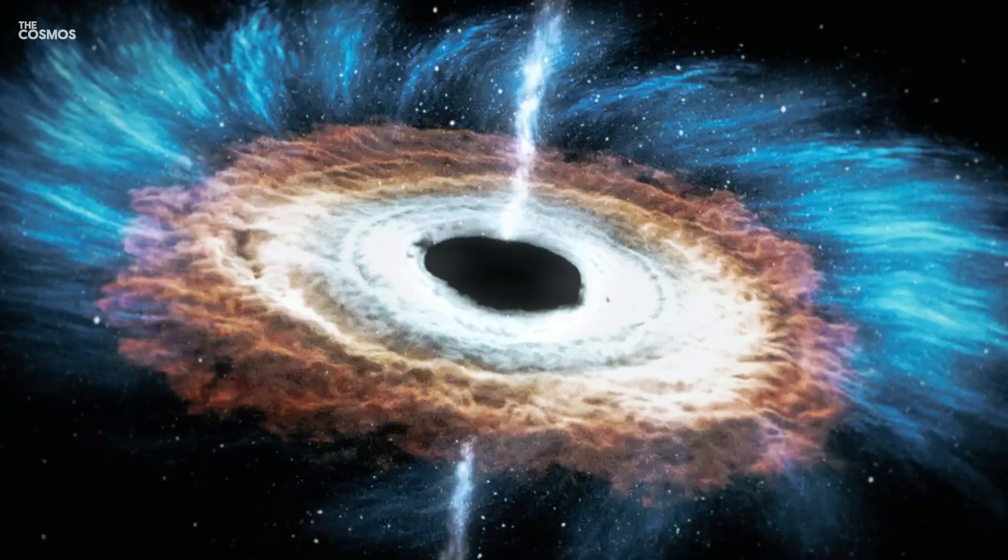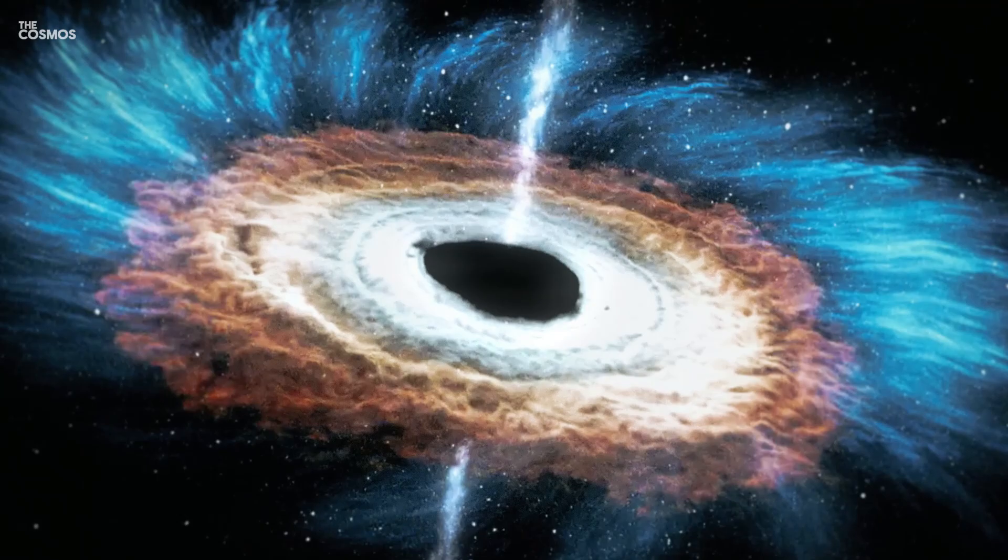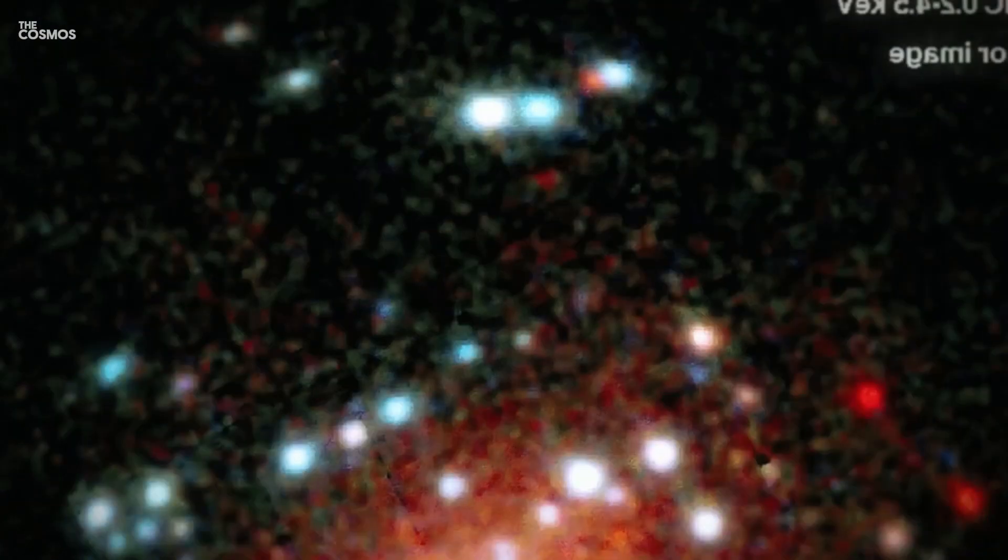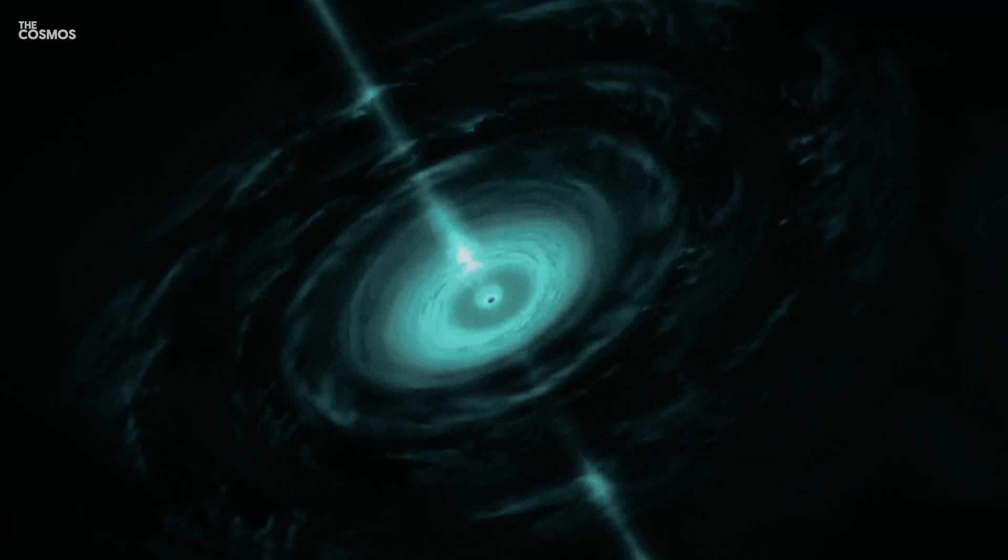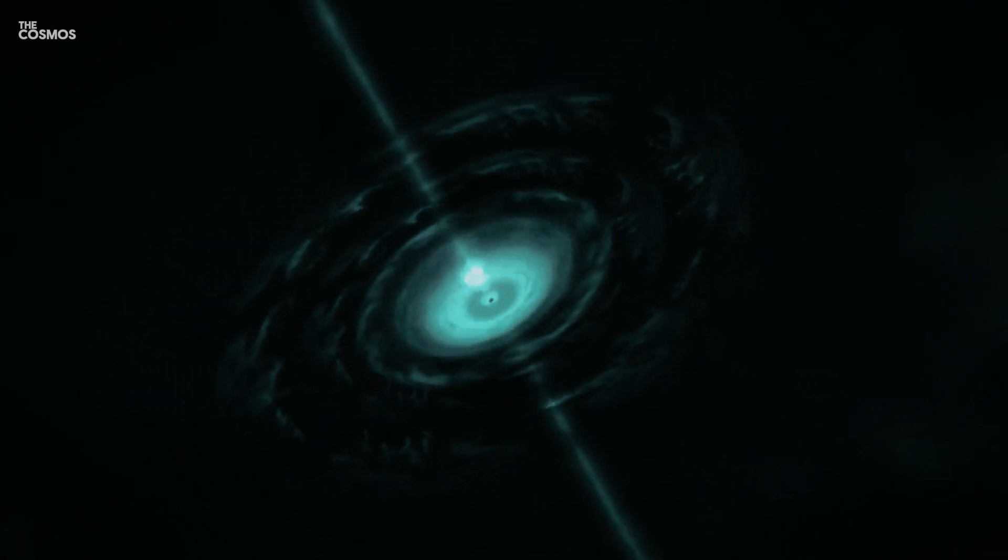Observations of these energetic emissions help astronomers understand the feeding habits of black holes and the impact they have on their surroundings. For example, the black hole in the galaxy M87 is known to produce such energetic jets, providing a spectacular display of its power.